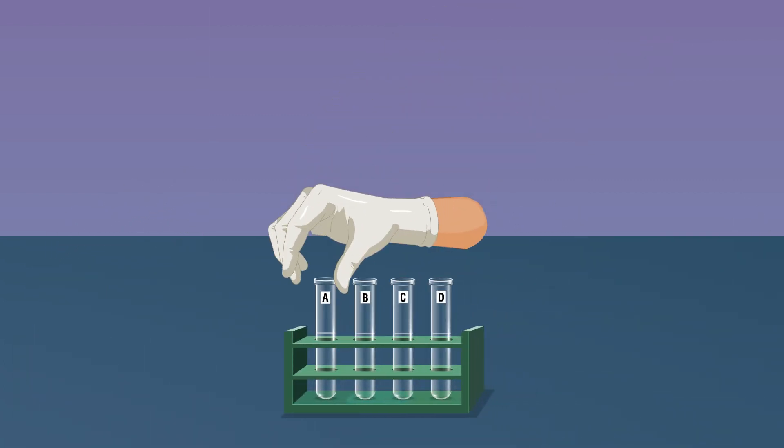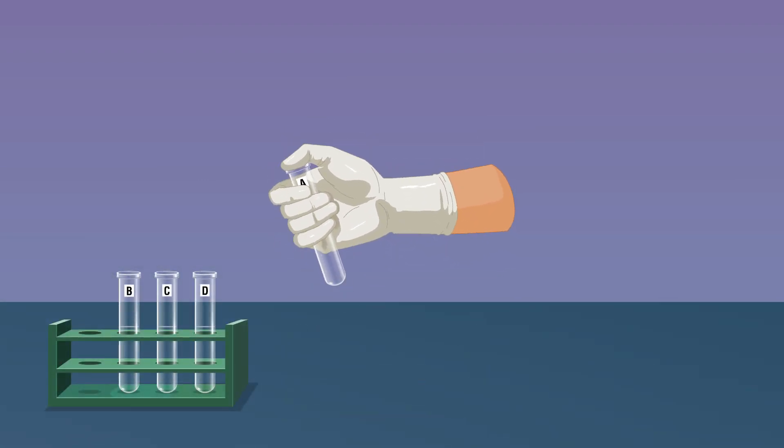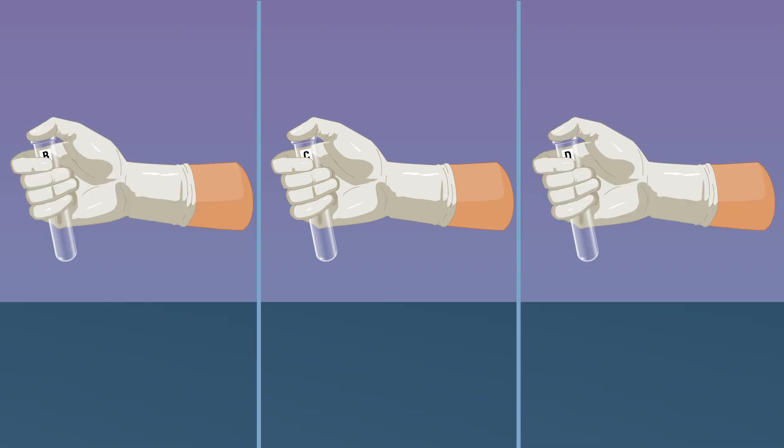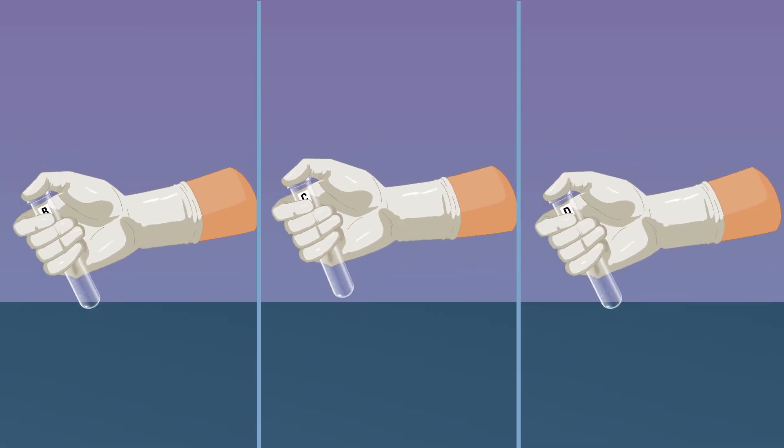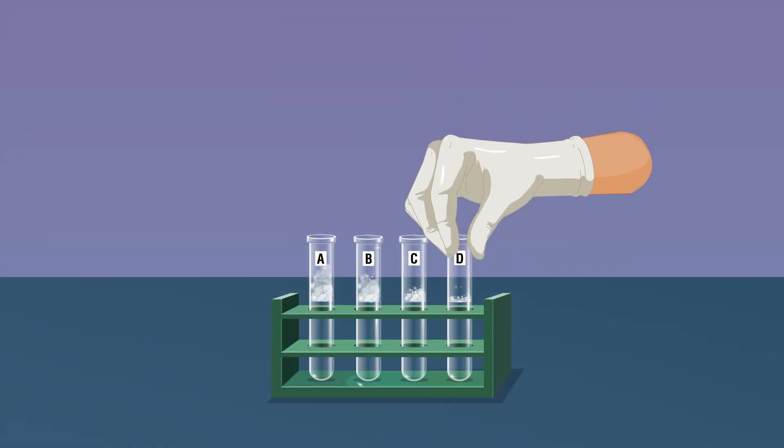Take the test tube labeled test tube A and shake it 10 times by placing the thumb on its mouth. Repeat the steps with the remaining three samples of soap solutions. By shaking the test tube will form the foam.